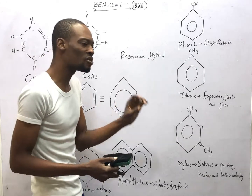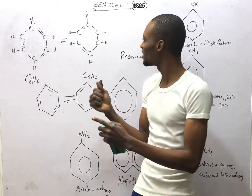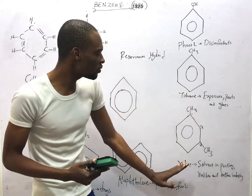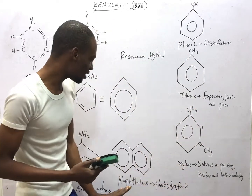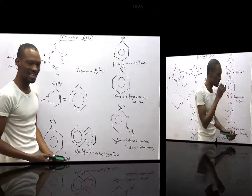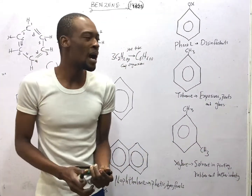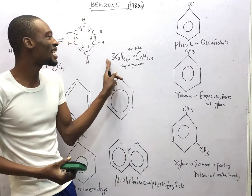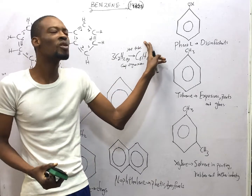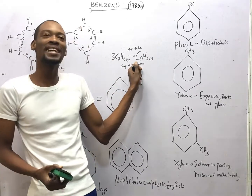Aromatic hydrocarbons are benzene and its derivatives. The derivatives of benzene are phenol, toluene, xylene, naphthalene, and aniline. Benzene can be prepared by passing ethyne through a red-hot tube containing a complex organometallic catalyst.